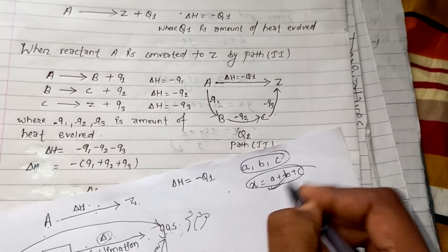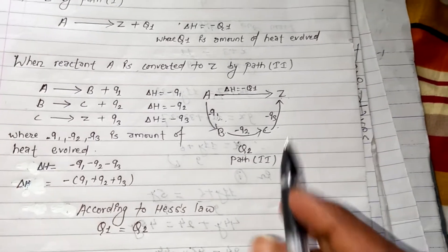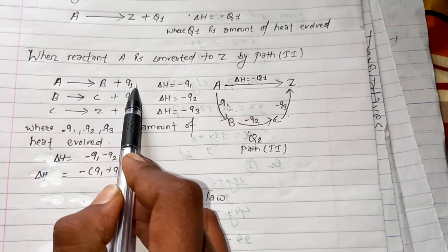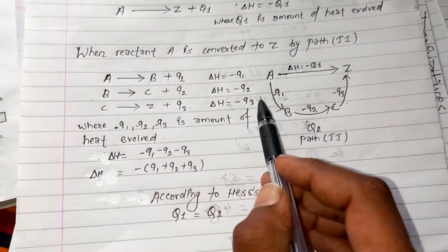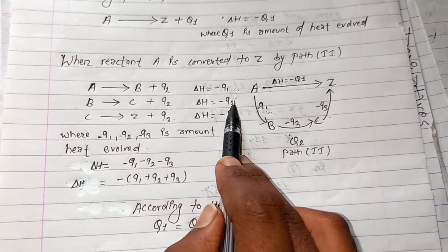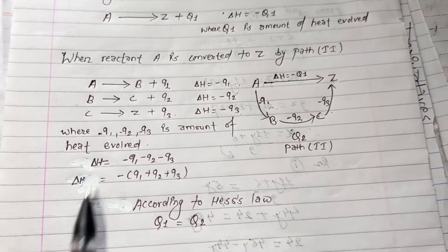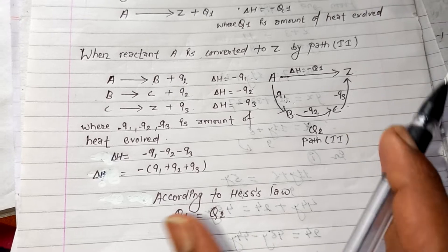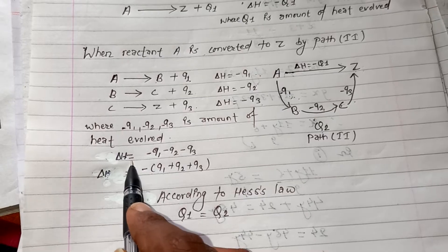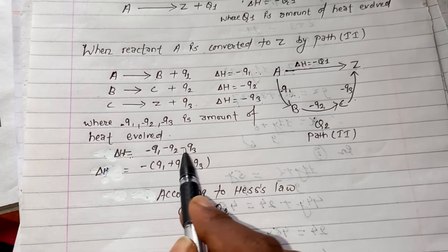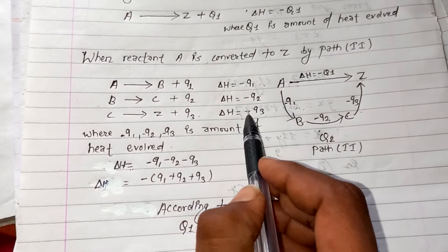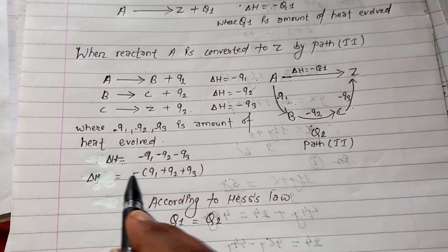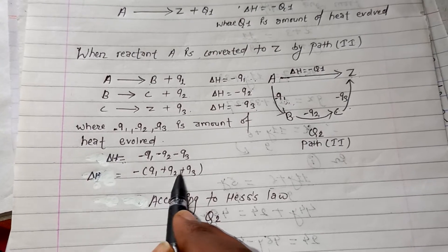The total enthalpy change X equals Q1 plus Q2 plus Q3. The enthalpy change for path 1 is minus Q, and for path 2, the enthalpy change is minus Q1 plus minus Q2 plus minus Q3, which equals minus Q1 minus Q2 minus Q3. Therefore, the overall enthalpy change equals Q1 plus Q2 plus Q3.